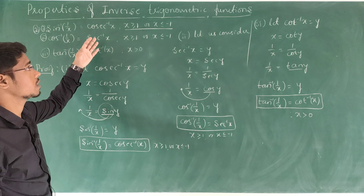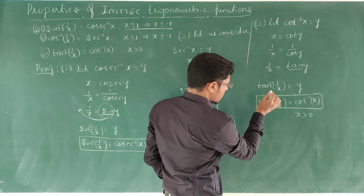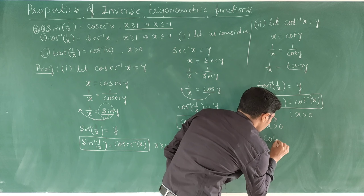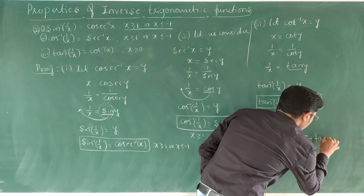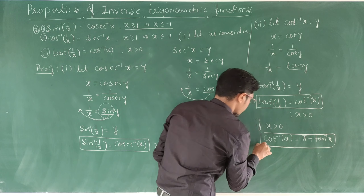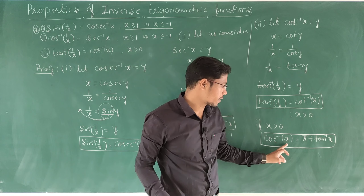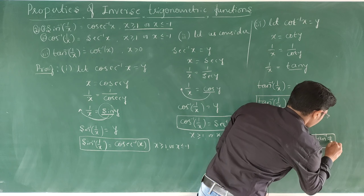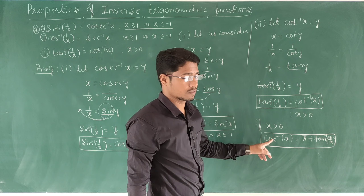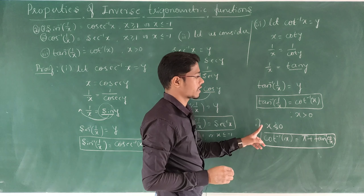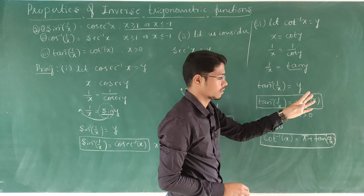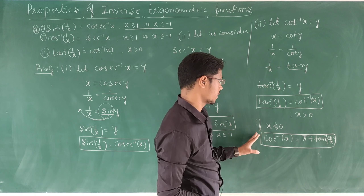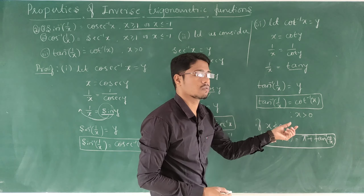These are the first three basic properties of inverse trigonometric functions. For the third condition, if x is greater than 0, tan inverse of 1/x equals cot inverse of x. Very important: if x is less than 0, cot inverse of x equals pi plus tan inverse of 1/x. Keep this in mind — it is a very important property.